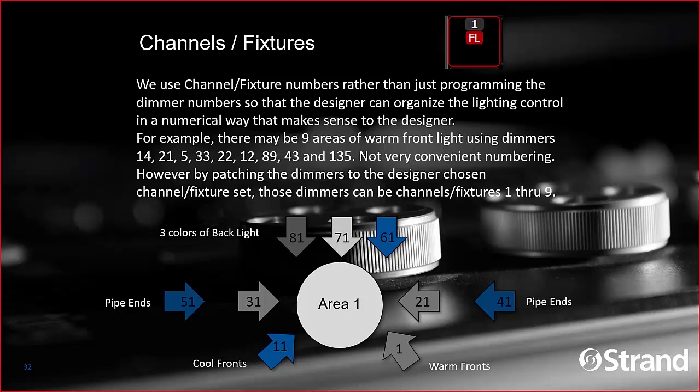When patching, it has been typical in many environments to do a one-to-one patch, which allows you to match the channel number with the dimmer number. This makes a lot of sense from the electrician's point of view: you can walk on stage, look up at the electric, see the label that says 23, call up to whoever's on the board and say 'turn on channel 23,' and you know you're going to get output from the light plugged into dimmer 23 or circuit 23.